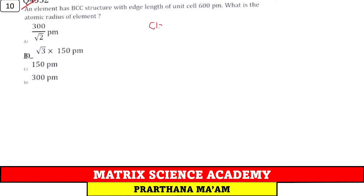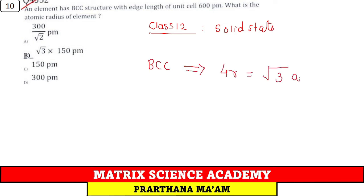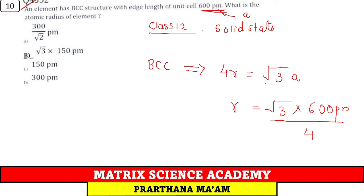Question 10: An element has BCC structure. The relation between edge length a and radius r is: 4r = √3·a. Given edge length a = 600 pm, find radius. 4r = √3 × 600, so r = √3 × 150 pm. Option B.